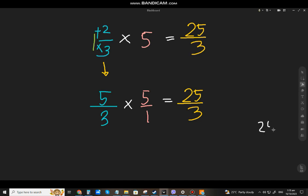25, divide by 3. How many 3s in 25, that will be 8. 8 times 3, that will be 24. 25 minus 24, that will be 1. Remainder 1.